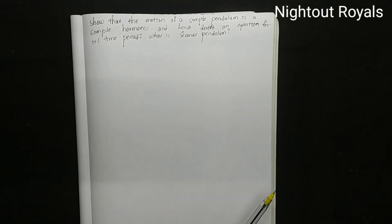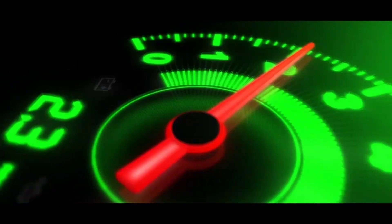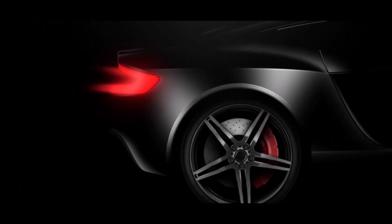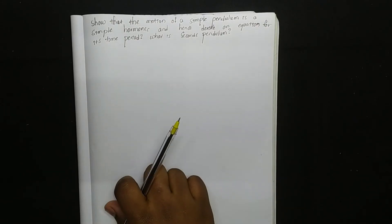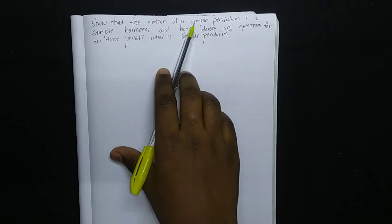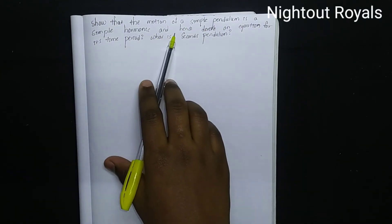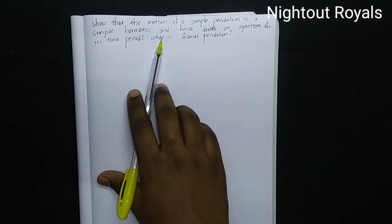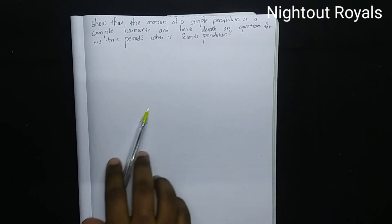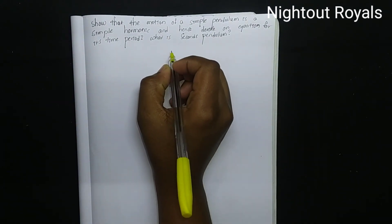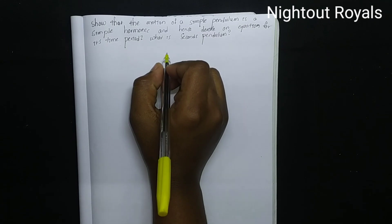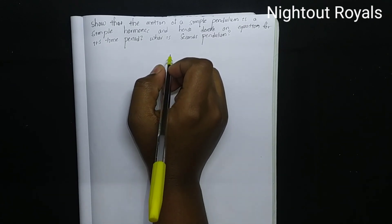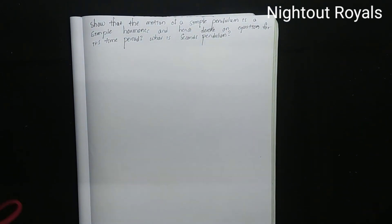Hi students, welcome back to our channel. Here is the problem: show that the motion of a simple pendulum is simple harmonic and hence derive an equation for its time period. What is a seconds pendulum? A seconds pendulum has a time period, find the length, acceleration, and also find the root.